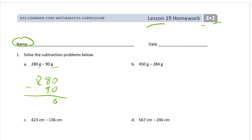0 ones, 1 ten. 8 tens minus 9 tens — I don't have enough tens, so I have to break up one of these hundreds. Now I have 18 tens. 18 minus 9 is 9, and we still have that 1 hundred. The answer is in grams.